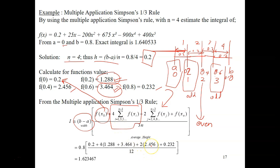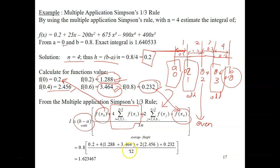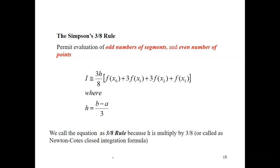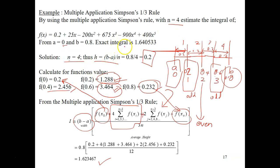Now for the even points. In this example, we only have one even point. Plus 2, and in the bracket, the summation is 2.456. The last point for the limit is 2.32. Divided by 3 times n, where n is number of segments equal to 4. You will get this answer, which is very close to the exact integral — very, very close.